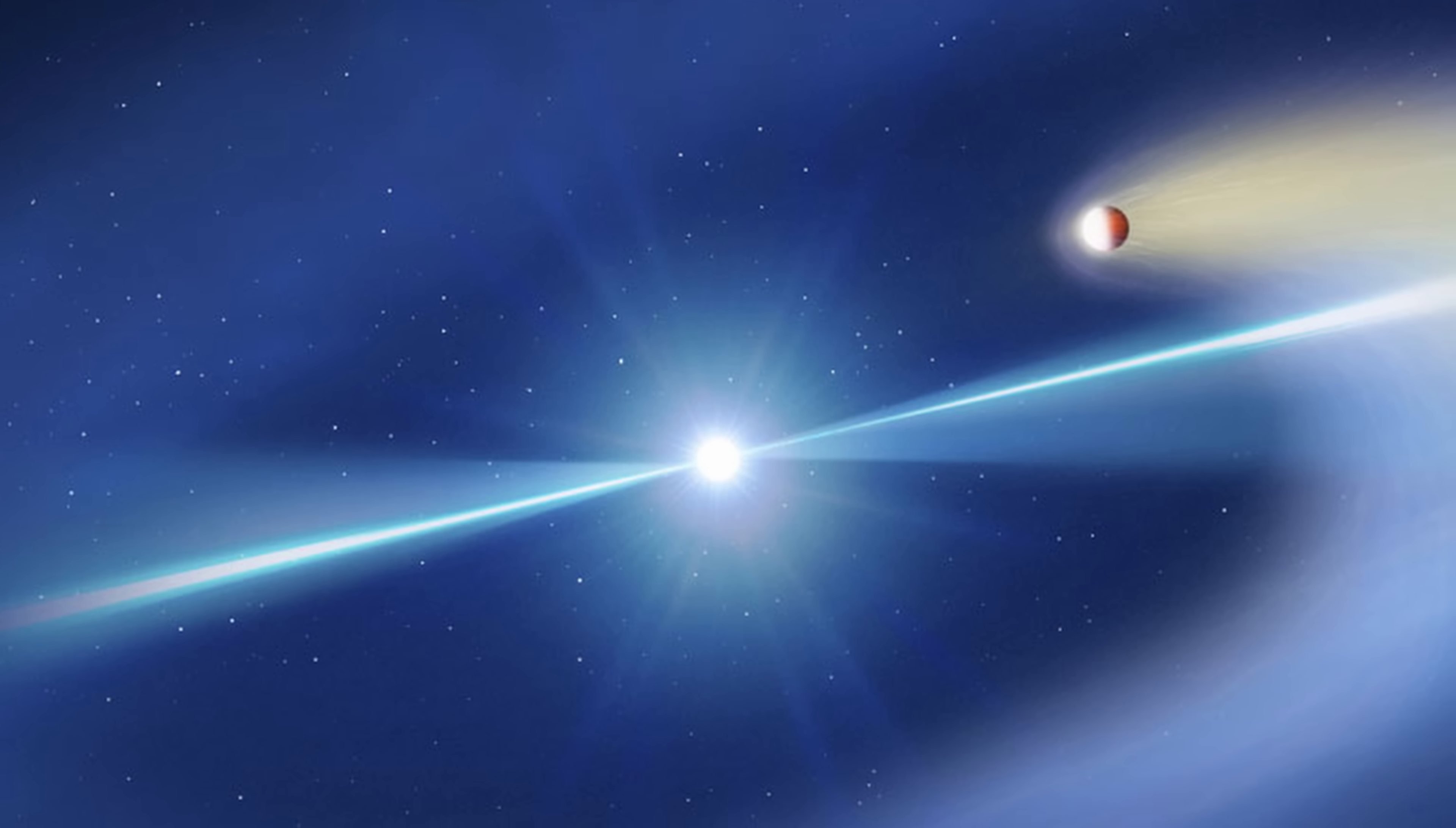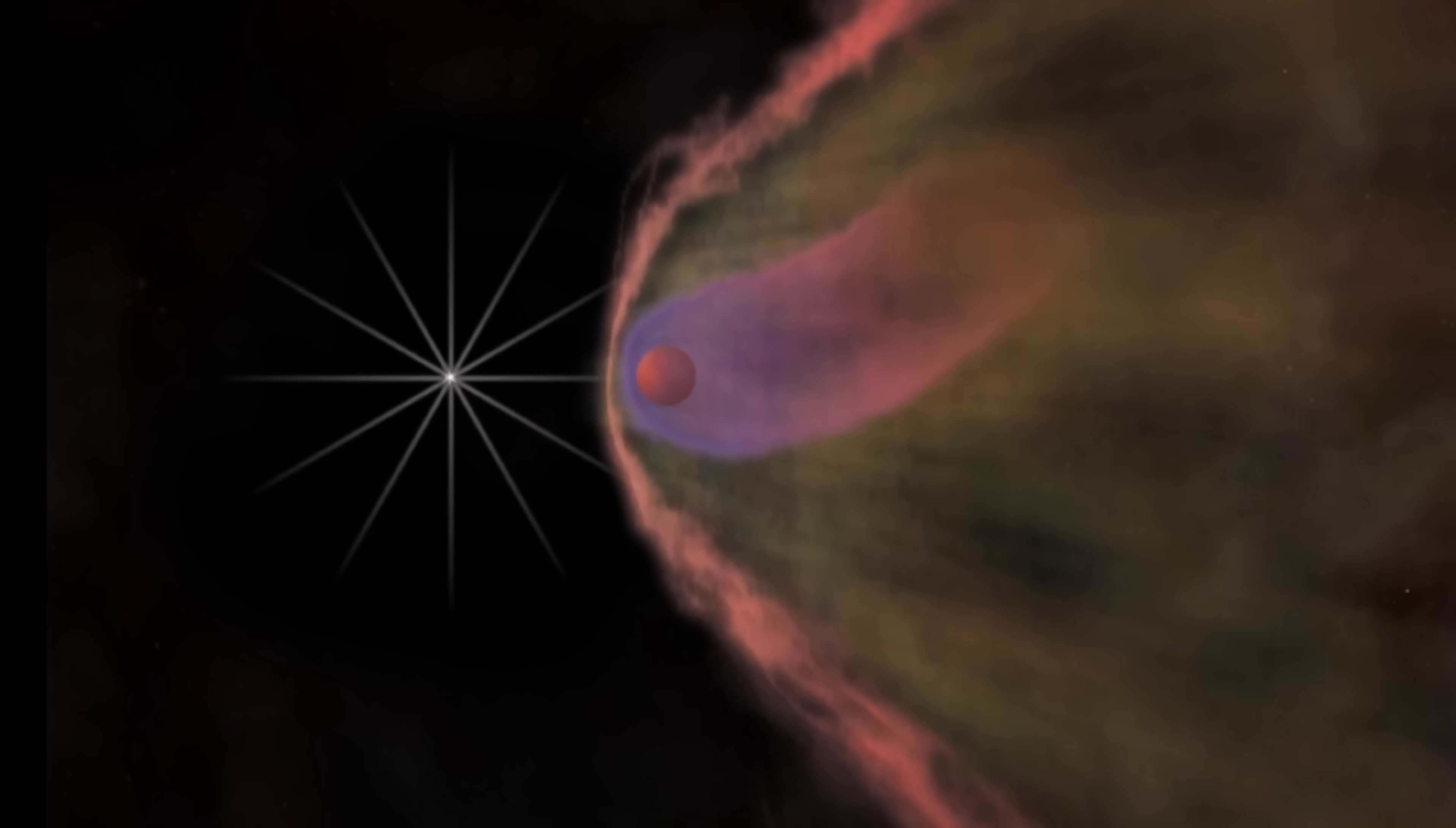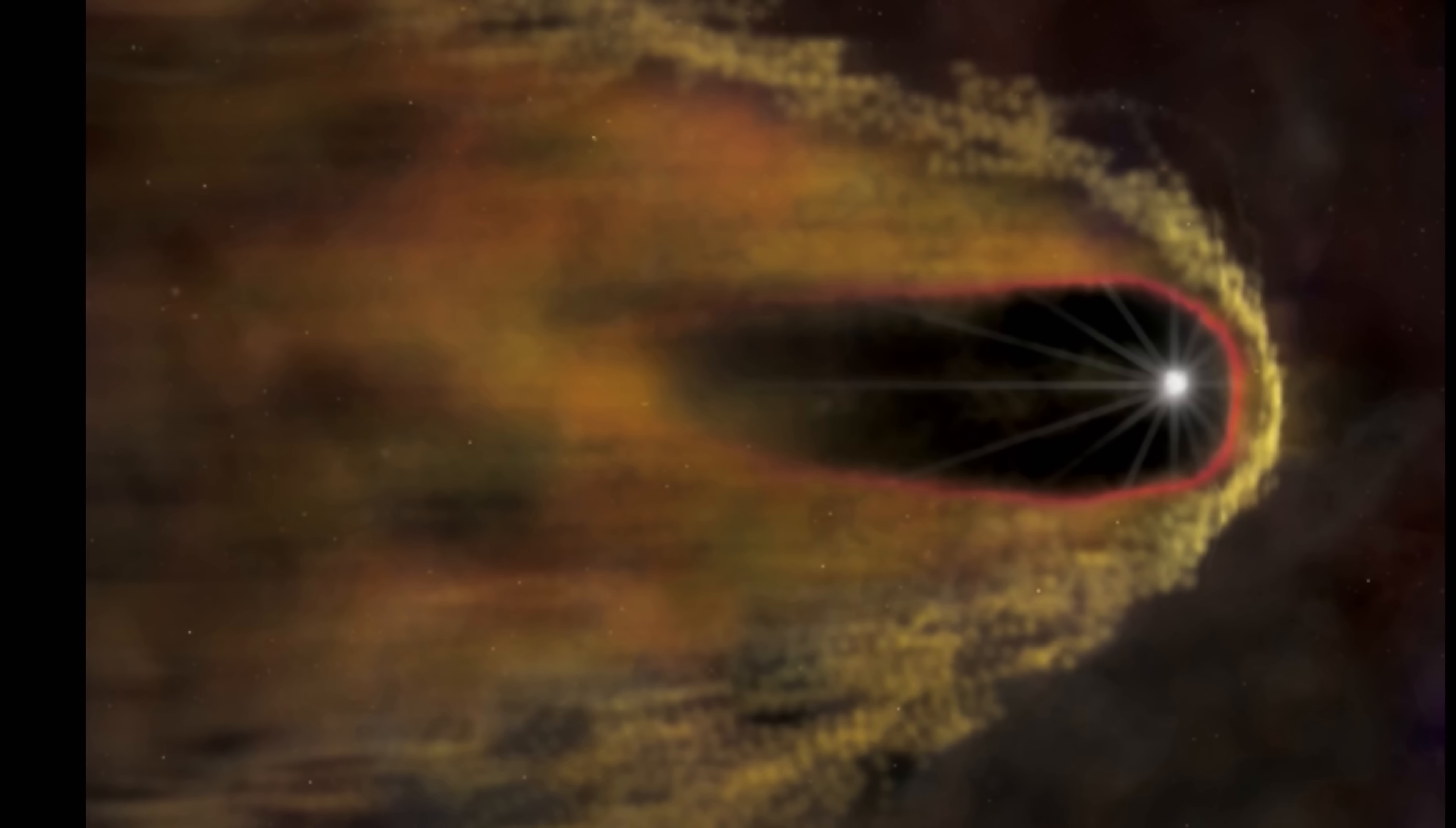...is very likely orbiting super close to its partner, possibly between 1 and 14 lunar distances, or basically just a few hundred thousand kilometers away from each other, with the pulsar in this case producing so much radiation and so many pulsar winds that it basically starts evaporating its partner. And this evaporation can be visible from very far away, which is exactly what's visible in this image.